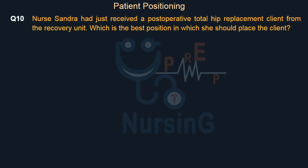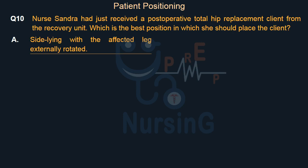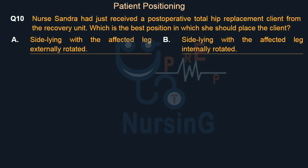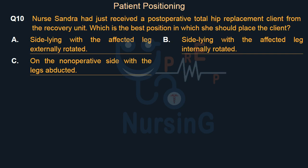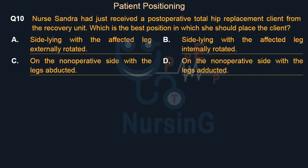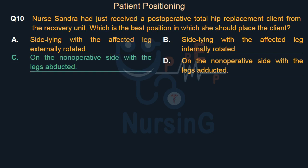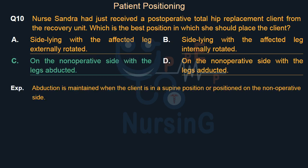Nurse Sandra has just received a post-operative total hip replacement client from the recovery unit. Which is the best position in which she should place the client? Option A, side lying with the affected leg externally rotated; Option B, side lying with the affected leg internally rotated; Option C, on the non-operative side with the legs abducted; Option D, on the non-operative side with the legs adducted. The right answer is Option C. Abduction is maintained when the client is supine or positioned on the non-operative side.